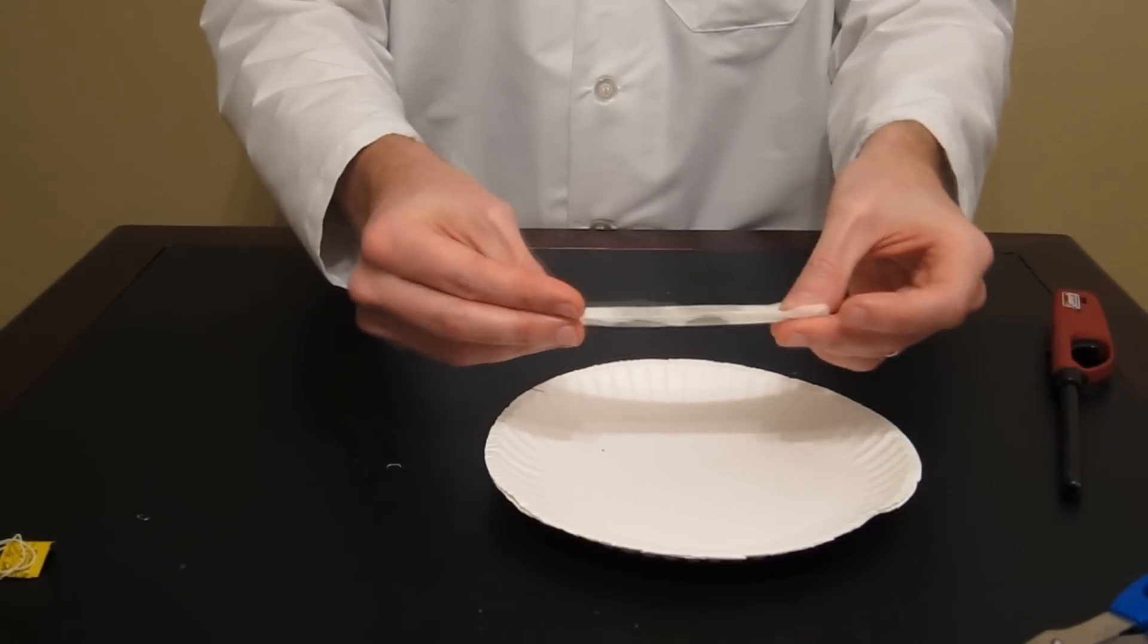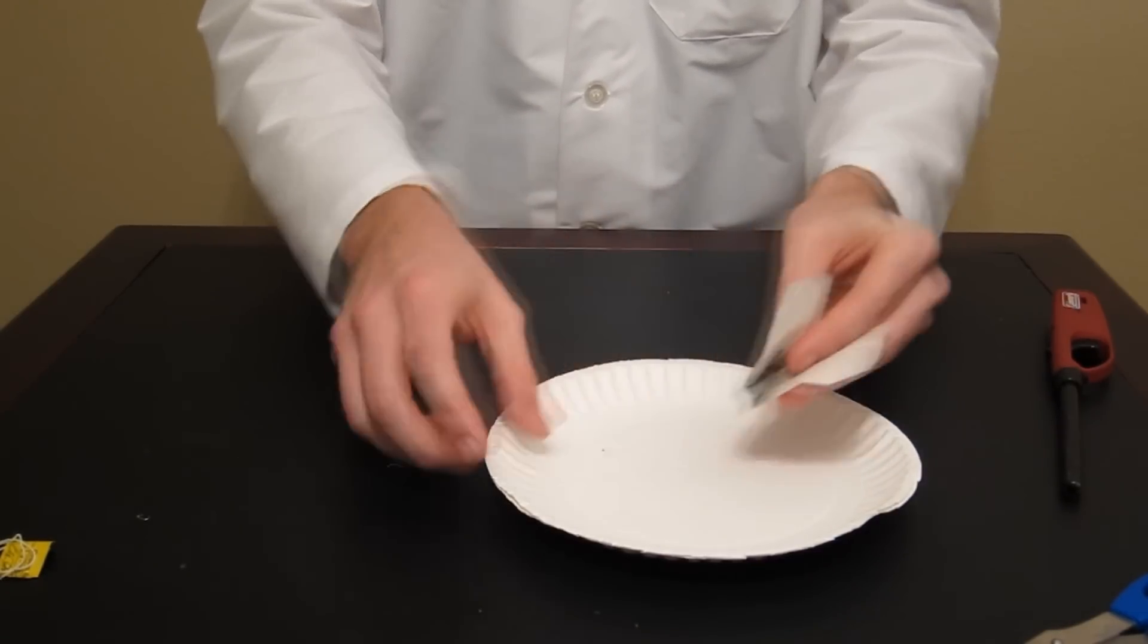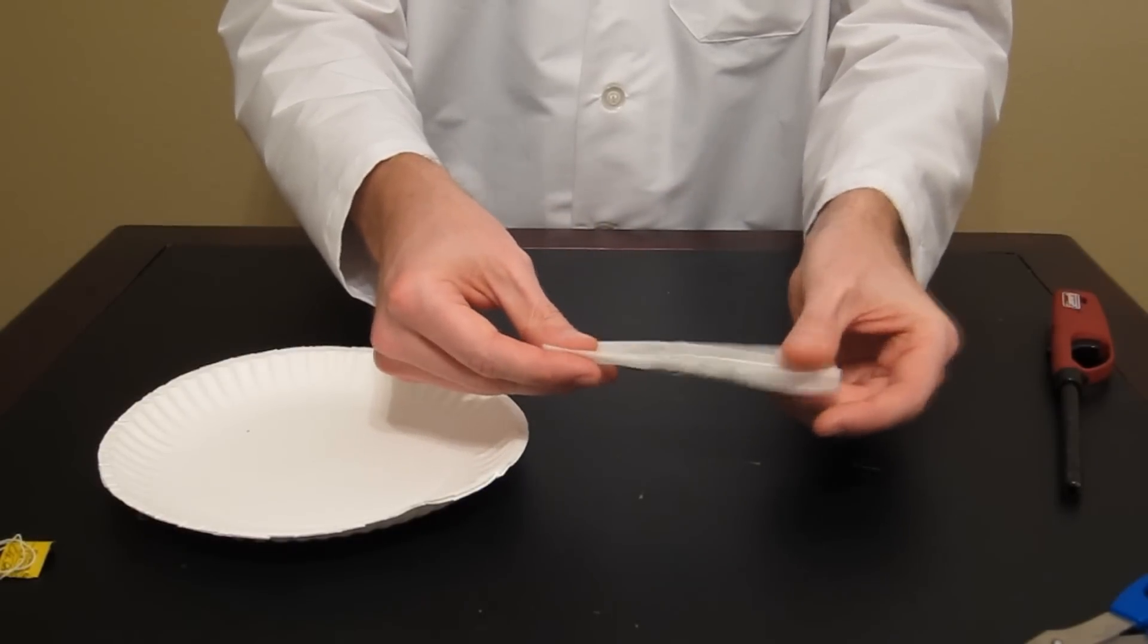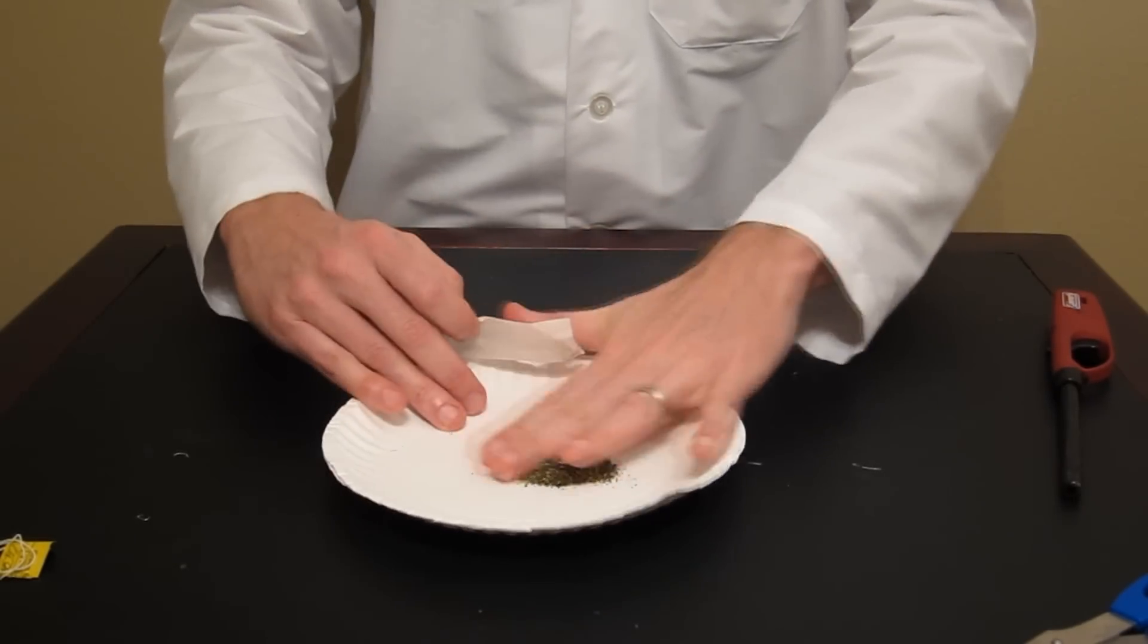Okay, so we'll open the teabag up and now we have a sleeve. This sleeve contains all the tea and we'll pour the tea out onto the plate. We'll kind of just push it to the side.